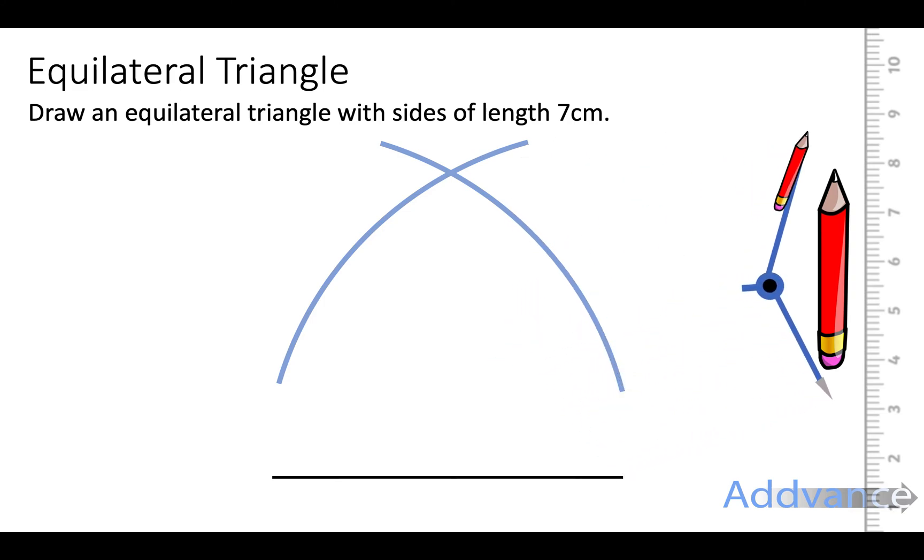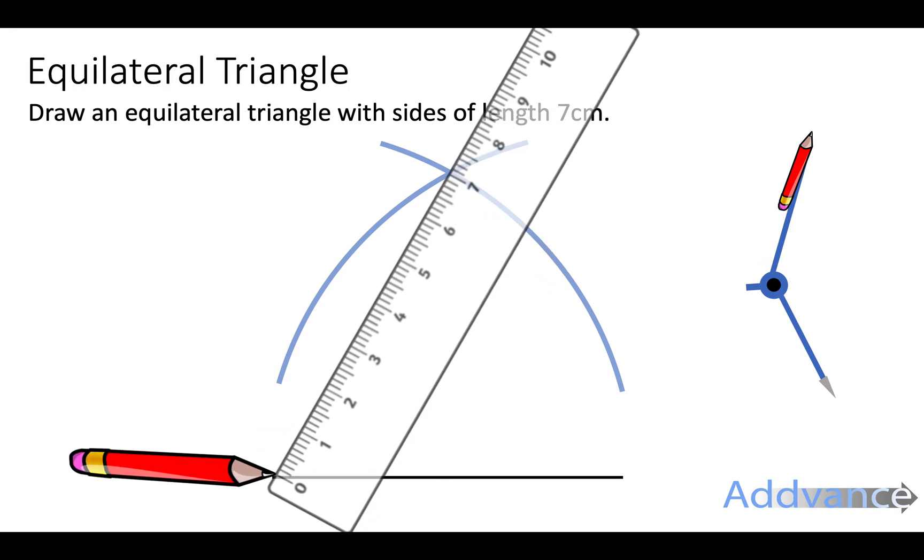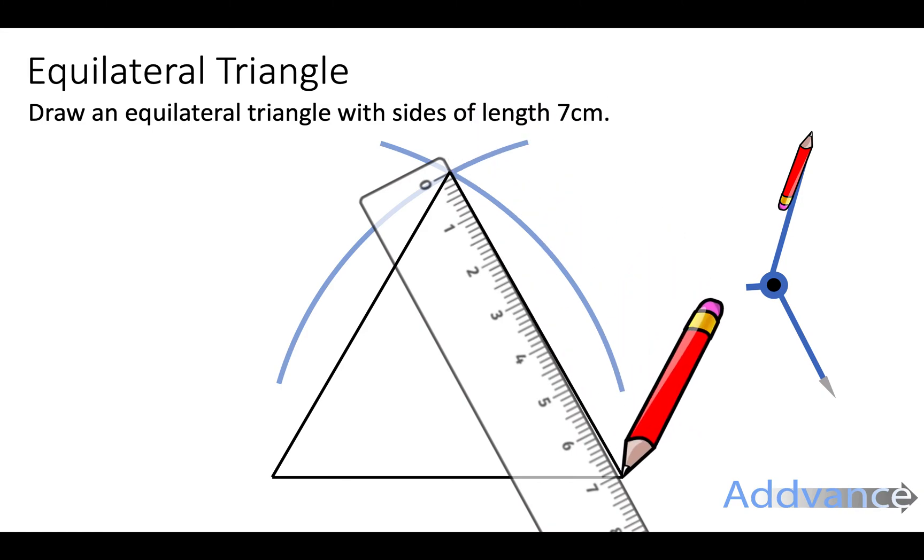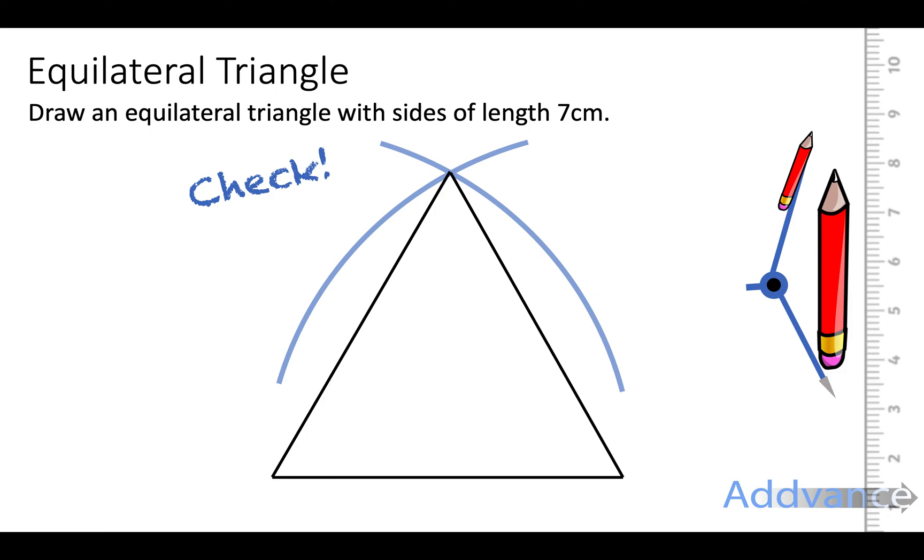And we connect the two ends of the lines to where they cross over at the top, like this and like this. And that is a perfect equilateral triangle.